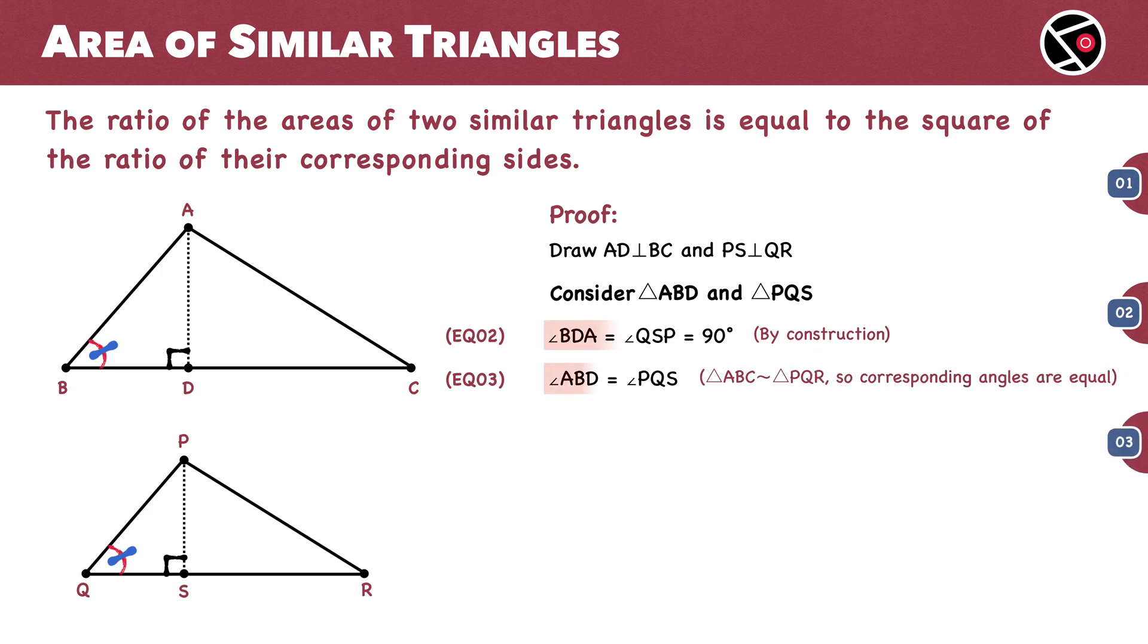With two pairs of equal corresponding angles, by the AA criterion for similarity, Triangle ABD is similar to triangle PQS.